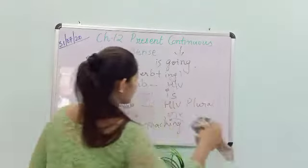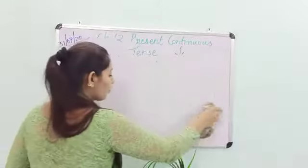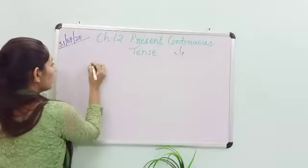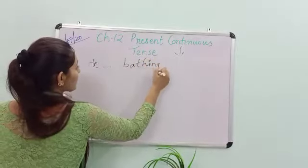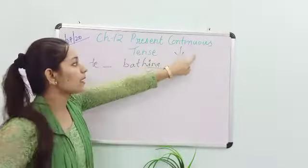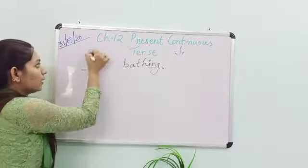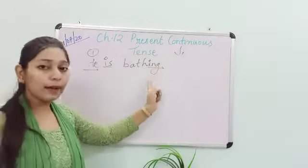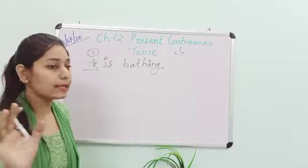So if I say on the basis of singular term, agar aapko aur bhi cheezein jaanni hai is are ki basis pe, to you can understand from here. I think abhi aapko thoda sa confusion hoga. Like if I say he is bathing. To bathing means he is taking a bath. Woh abhi bhi naha raha hai. To if he is bathing, to it means it is a continuous tense. Aap isko present mein laga hai, to we have to see the subject. Subject is one. He means ek person hai. Ek ho gaya hai. To it means he is. To kya ho gaya? Is lag gaya. Helping verb is ho gaya. It means that is your present continuous tense.